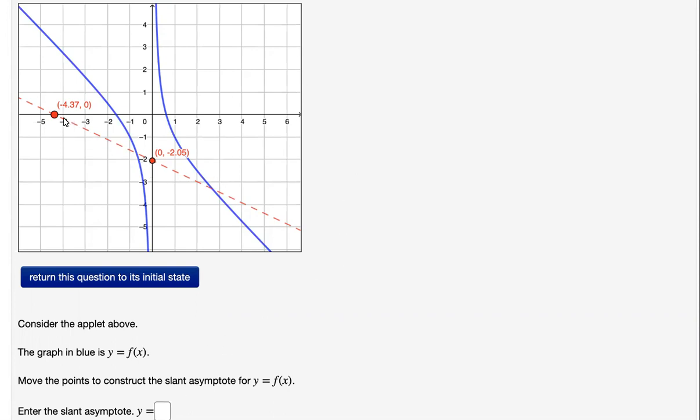So recall, the slant asymptote is a line such that the curve gets closer and closer to it as x approaches infinity. So perhaps this point should go down here somehow.